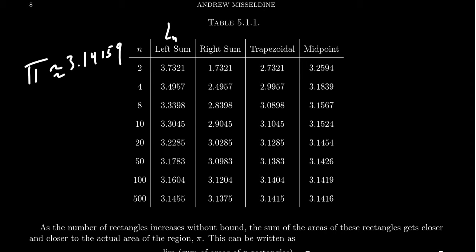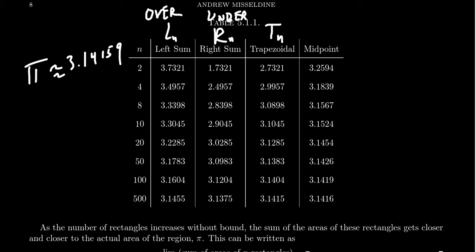For the right rule RN, with 500 rectangles you get 3.1375 — almost accurate to two decimal places. Averaging left and right with the trapezoid rule gives much better results: with 10 rectangles you get 3.1045, and with 500 rectangles you get 3.1415 — that looks spot on.